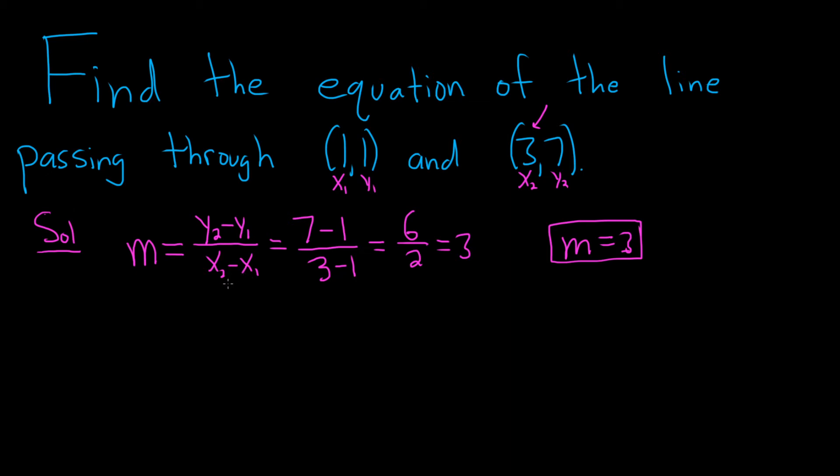The next step is to plug everything into another formula. The formula that I like to use is y minus y1 equals m times x minus x1. This is called the point slope formula.